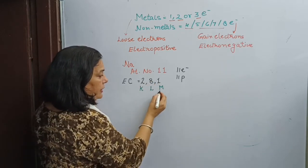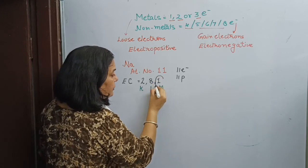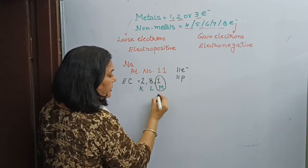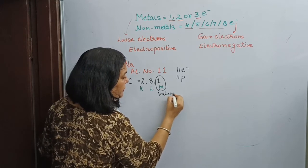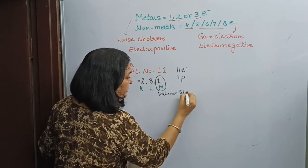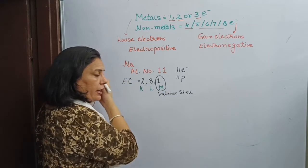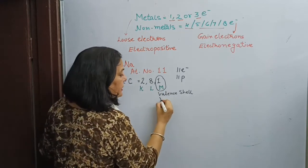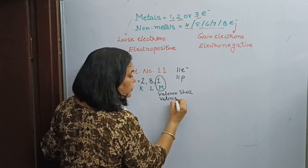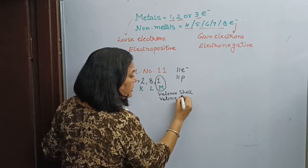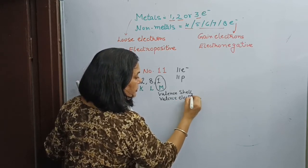Because the M shell is the last shell, it is called the valence shell. The electron which is present in the valence shell is called the valence electron. So how many valence electrons does sodium have? Sodium has only 1 valence electron.